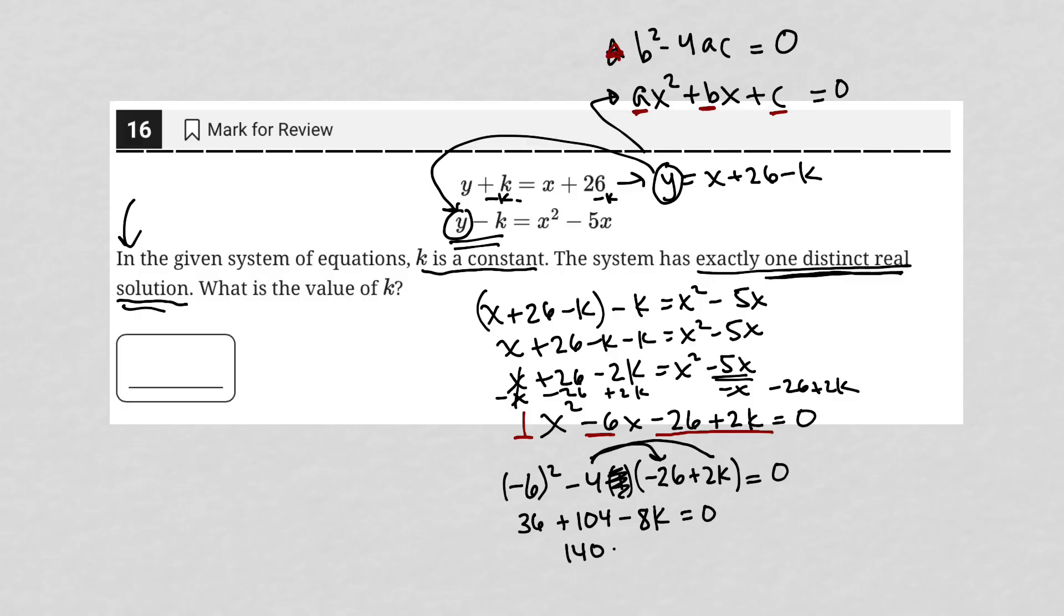This becomes 140 minus 8k equals 0. From there, I'm going to move the 8k over to the right by adding 8k to both sides. So now I have 140 equals 8k, and we divide both sides by 8, and we get our final answer that k is equal to 17.5.